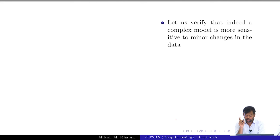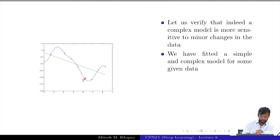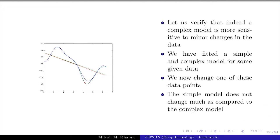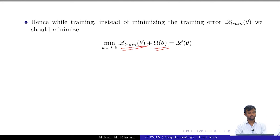Let us verify that a complex model is more sensitive to minor changes in the data. I trained one simple model — the green line, which is a linear model — and one complex model, a 25-degree polynomial. When I take one of these points and change it a bit and retrain, the simple model does not change much, but the complex model is much more sensitive. For a complex model, the summation we care about is going to be high, meaning the difference between the true error and the estimated error is high. That is why instead of minimizing the train error alone, we should minimize train error plus some quantity linked to model complexity — this is the basis for all regularization methods.